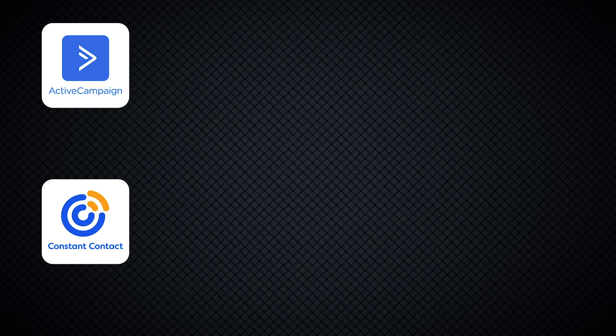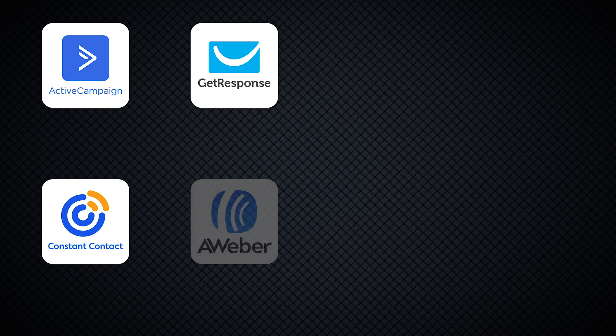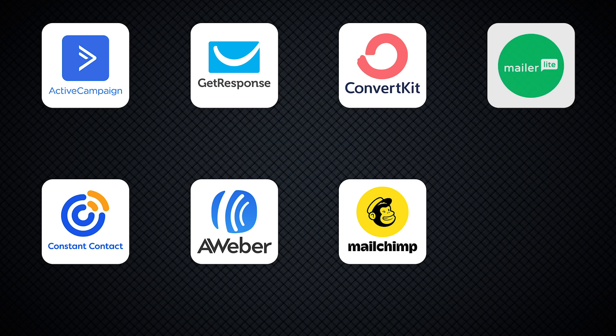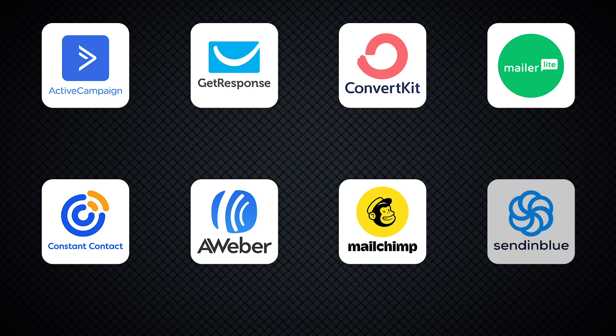I'm going to give you the pros and cons of different email marketing softwares and we're specifically looking at eight providers including both free and paid options: ActiveCampaign, Constant Contact, GetResponse, Aweber, ConvertKit, MailChimp, MailerLite, and SendInBlue.